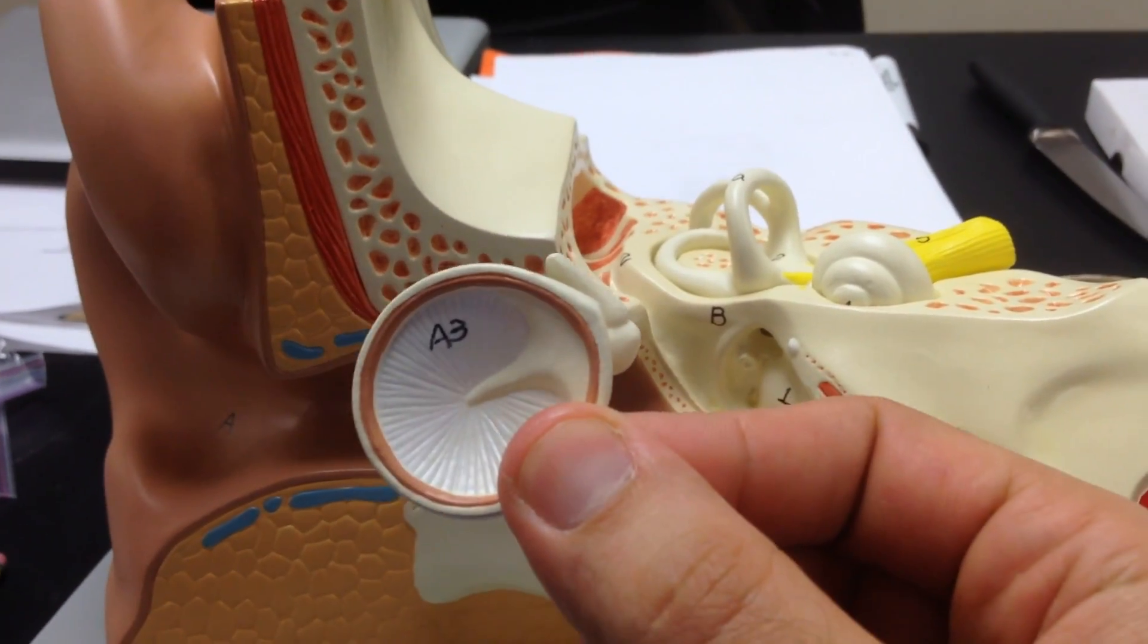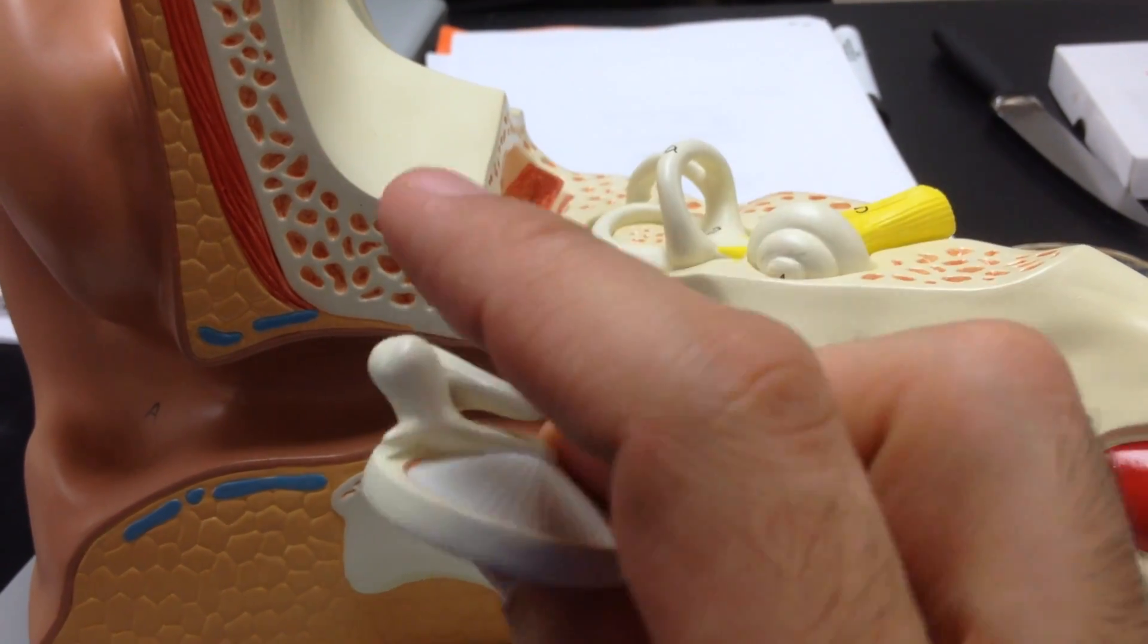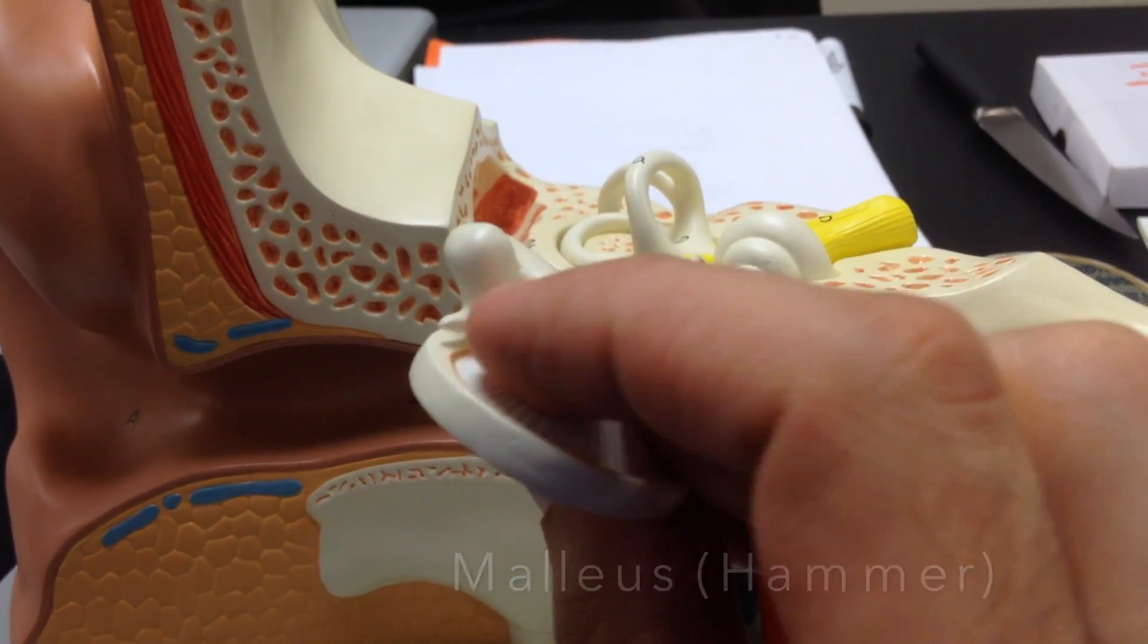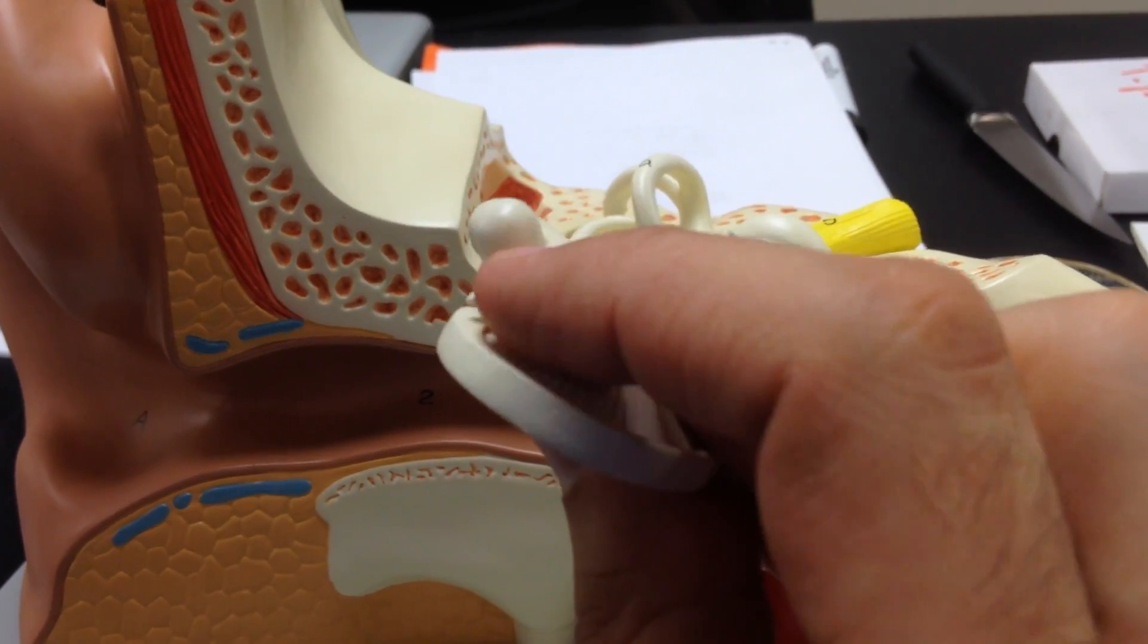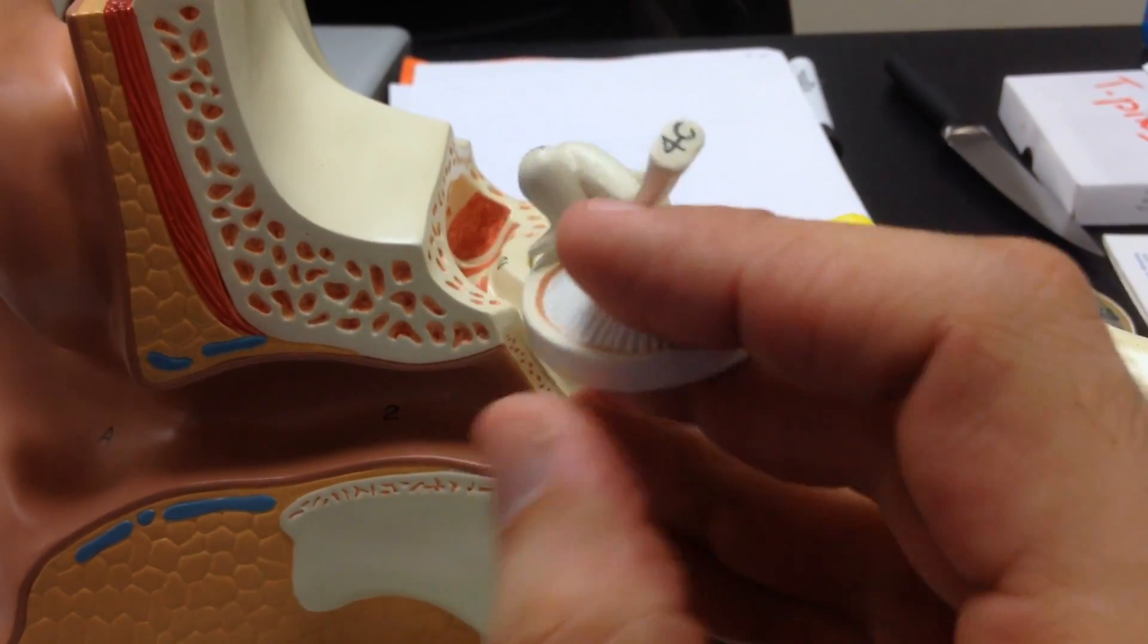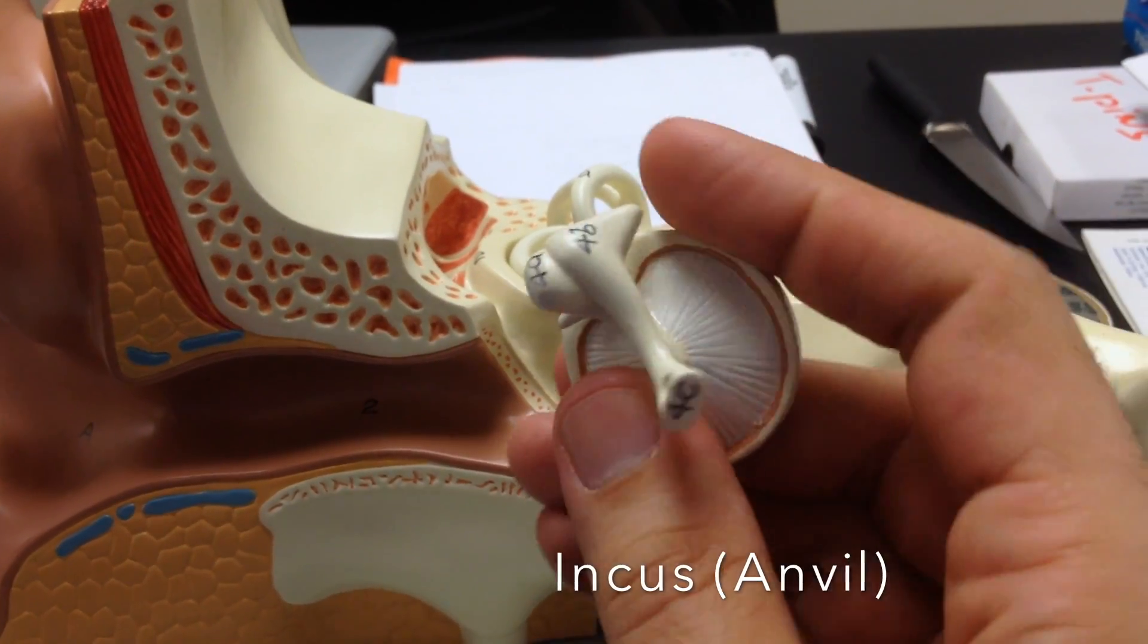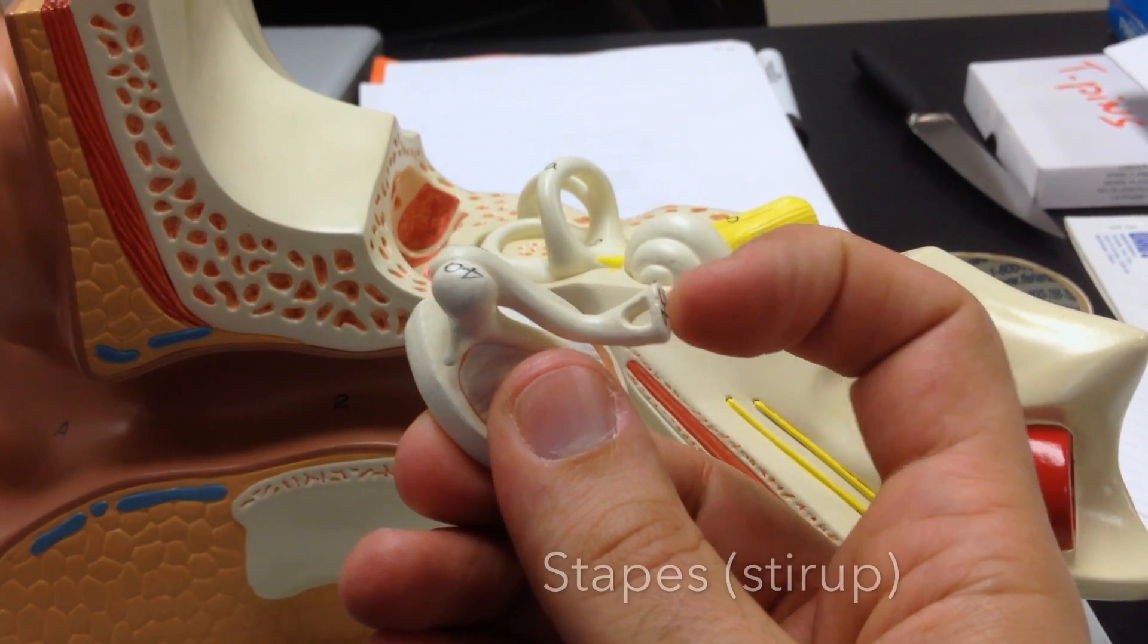The tympanic membrane communicates with three little bones. The first one at the end that looks like a hammer, I call that malleus. Think of rubber mallet, so then you know that this is the malleus. The second one in line would be this one, which is your incus. And finally, this one that looks like a stirrup, the stapes.